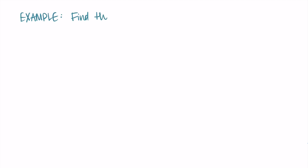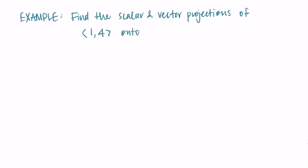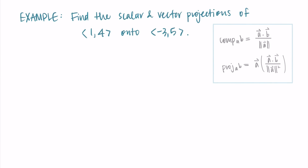Let's try an example finding both the scalar and vector projections of the vector (1, 4) onto the vector (-3, 5). I'll call the first vector b and the second vector a so they match our formulas. Looking at the formulas, I need the dot product a·b and the magnitude of a. I'll compute those separately and substitute them in. Feel free to pause and find them on your own.